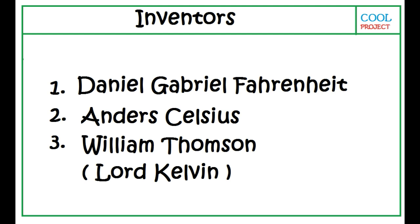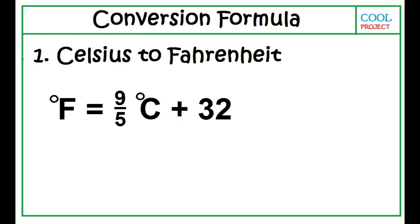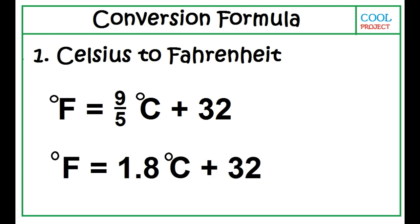Let's learn how to convert one temperature unit to another. To convert Celsius to Fahrenheit, use this formula: degree Fahrenheit is equal to 9 over 5 times degree Celsius plus 32. This is also equal to 1.8 times degree Celsius plus 32.